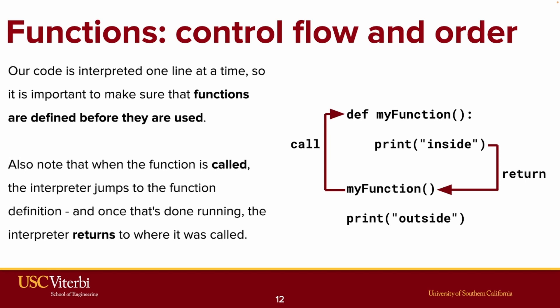Recognize that because your code is interpreted one line at a time, it's important to make sure that functions are defined before they're used. Otherwise, the interpreter won't know what you're talking about. Also recognize the flow control here. When the function is called, the Python interpreter jumps to the function definition and runs the code inside of it. And when it's done, it returns to the spot it previously jumped from. This will be really important later.